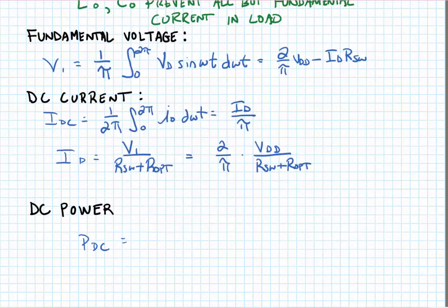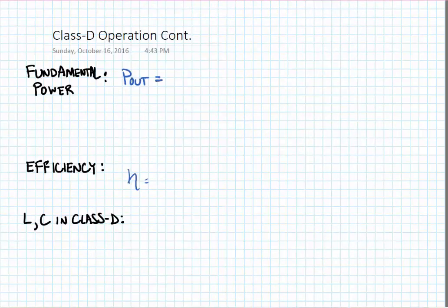From this, we can now find the DC power consumed. Putting everything together, we can find the fundamental power delivered to the load, P out, and we'll then find the efficiency.